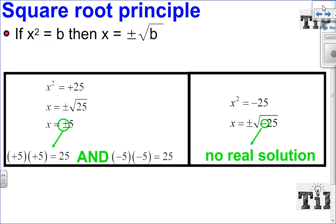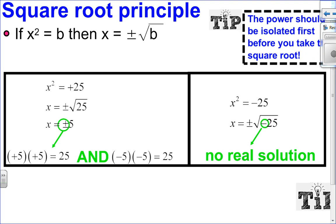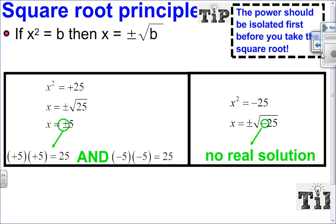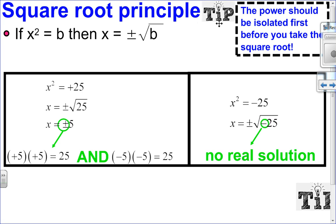Really important to solving by completing the square is the square root principle. The square root principle says: if x squared equals b, then x equals the positive and negative root of b. Whenever you take the square root, the answer is positive and negative. The key tip is that the power should be isolated first before you take the square root.